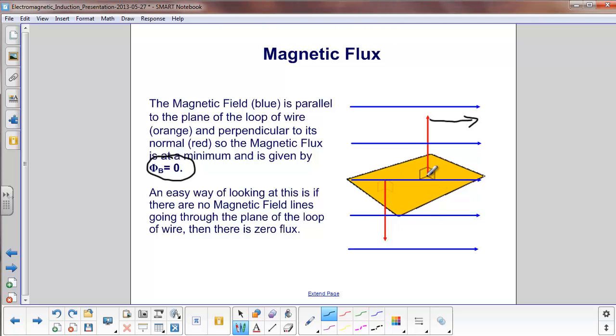There's an easier way to look at this. Take this cross-sectional area here of the wire loop, and it's extending out of the board. You can see the lines are going past it. None of the lines are actually cutting through the plane. If there are no magnetic field lines going through the plane of the loop, there is zero flux.